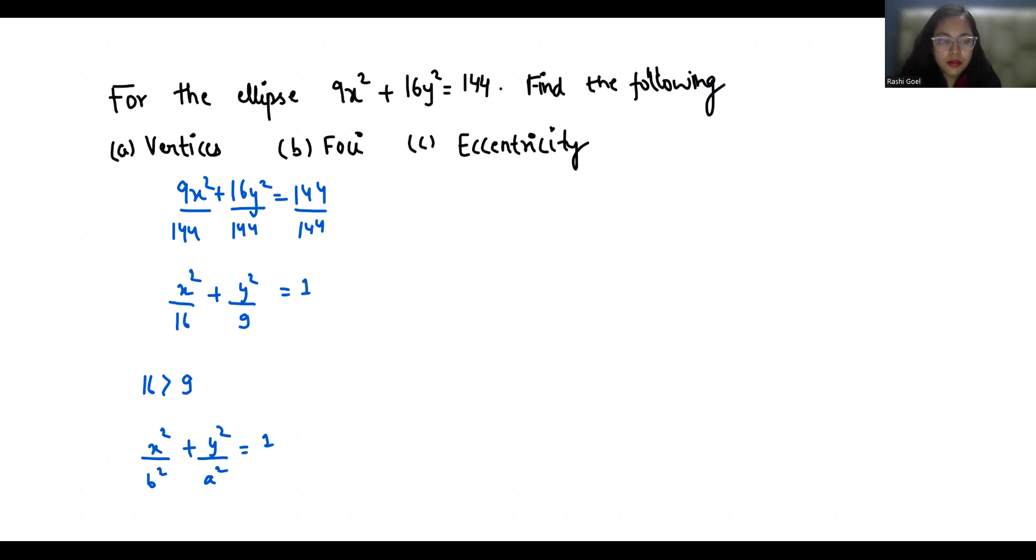So a² equals 9, which means a is 3, and b² equals 16, so b is 4.